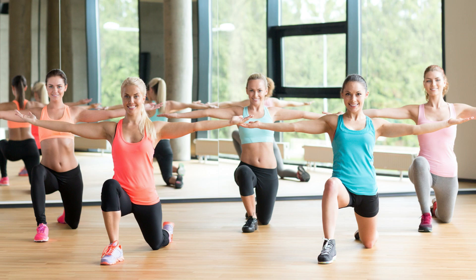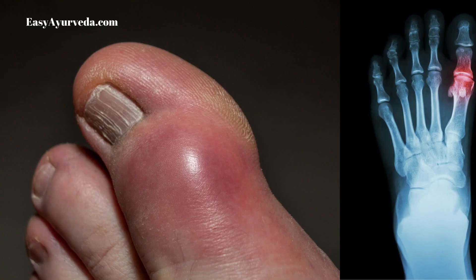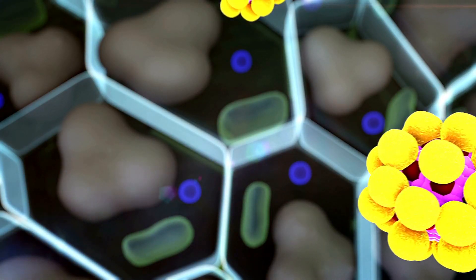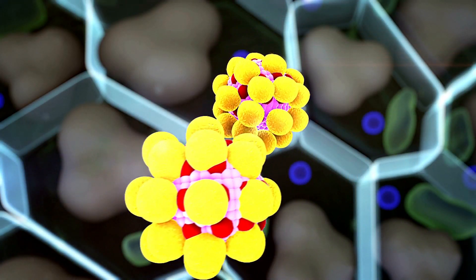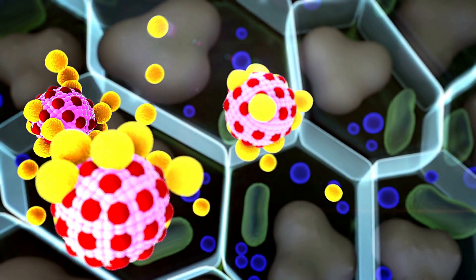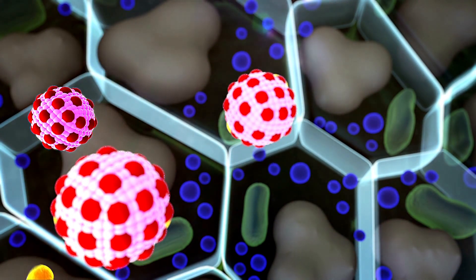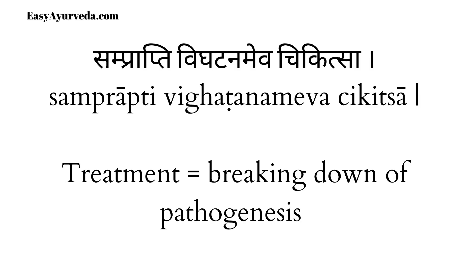In such cases, Guduchi will work as a rasayana dravya — it may be hepatostimulant or anti-gout. The drug has the potential to act in all those areas, but the particular atiopathogenesis must be present in the person for the drug to act in that specific direction. Once the atiopathogenesis is broken — what we call samprapti vigatana in Ayurveda — no further action continues in that direction.